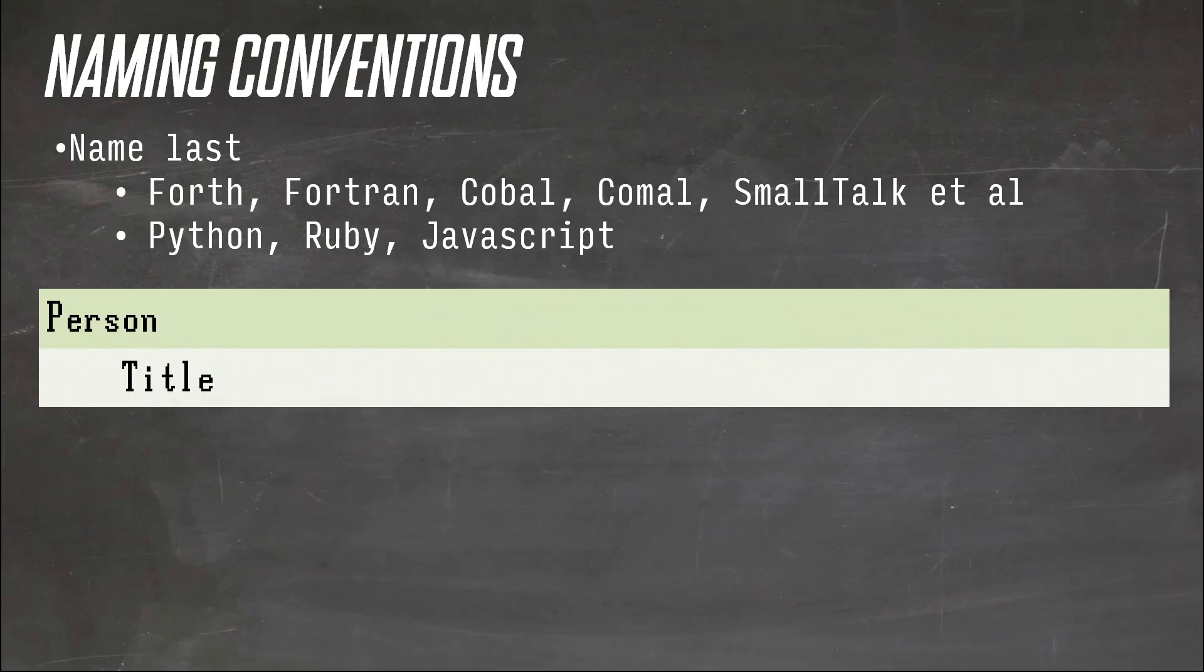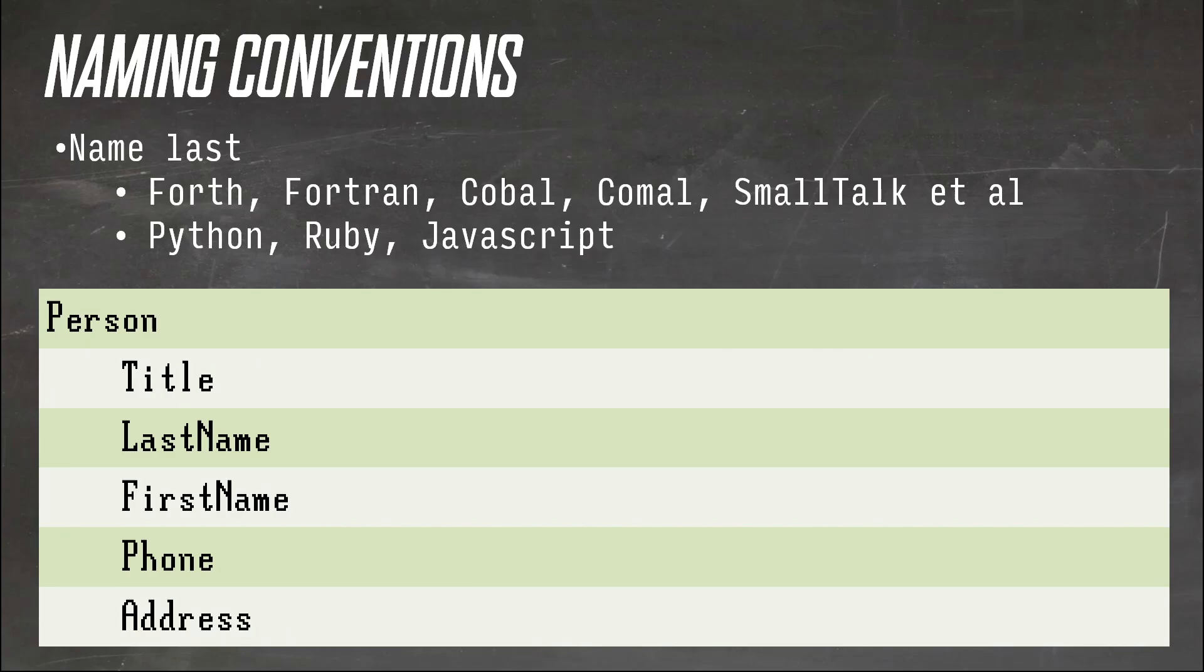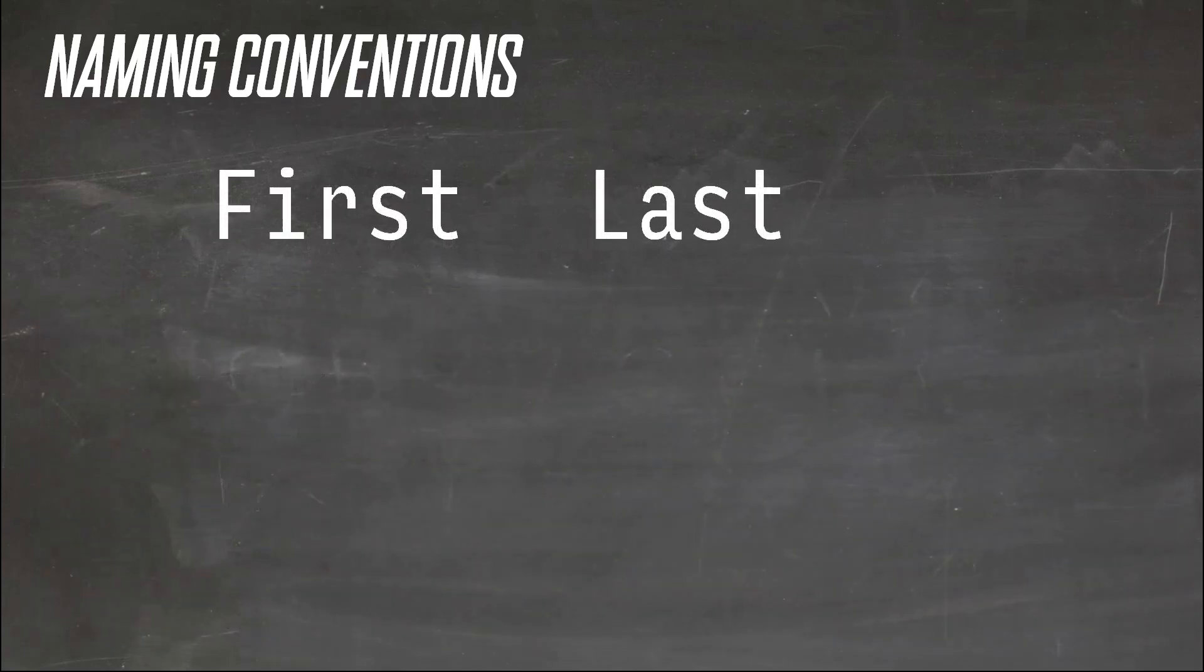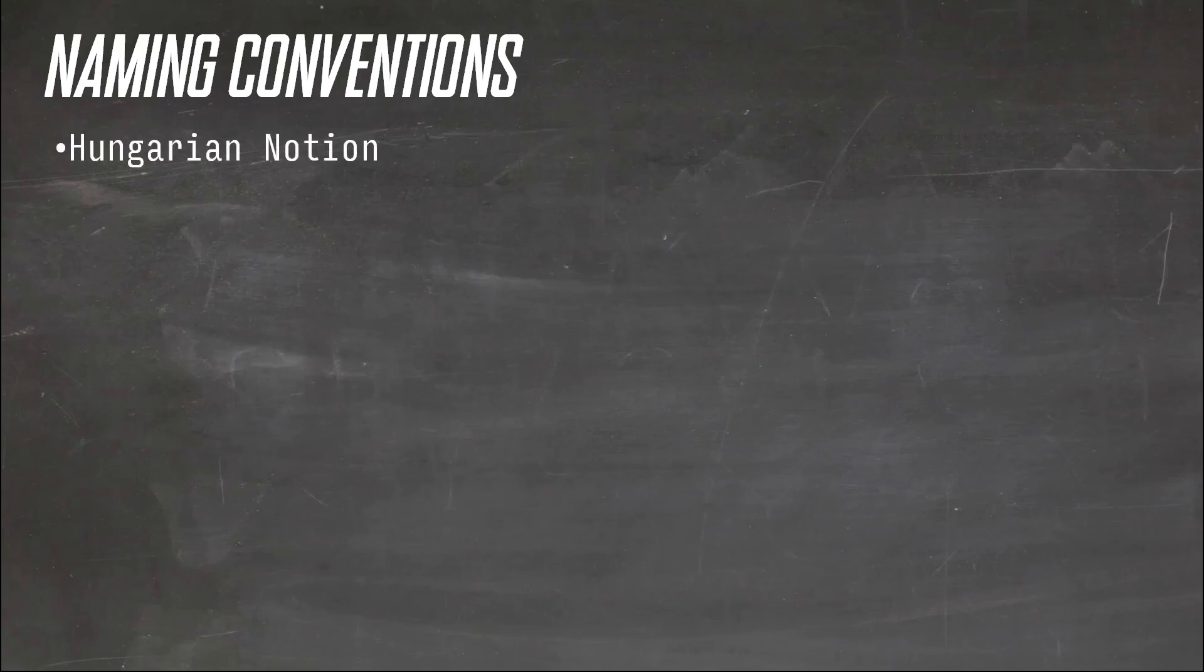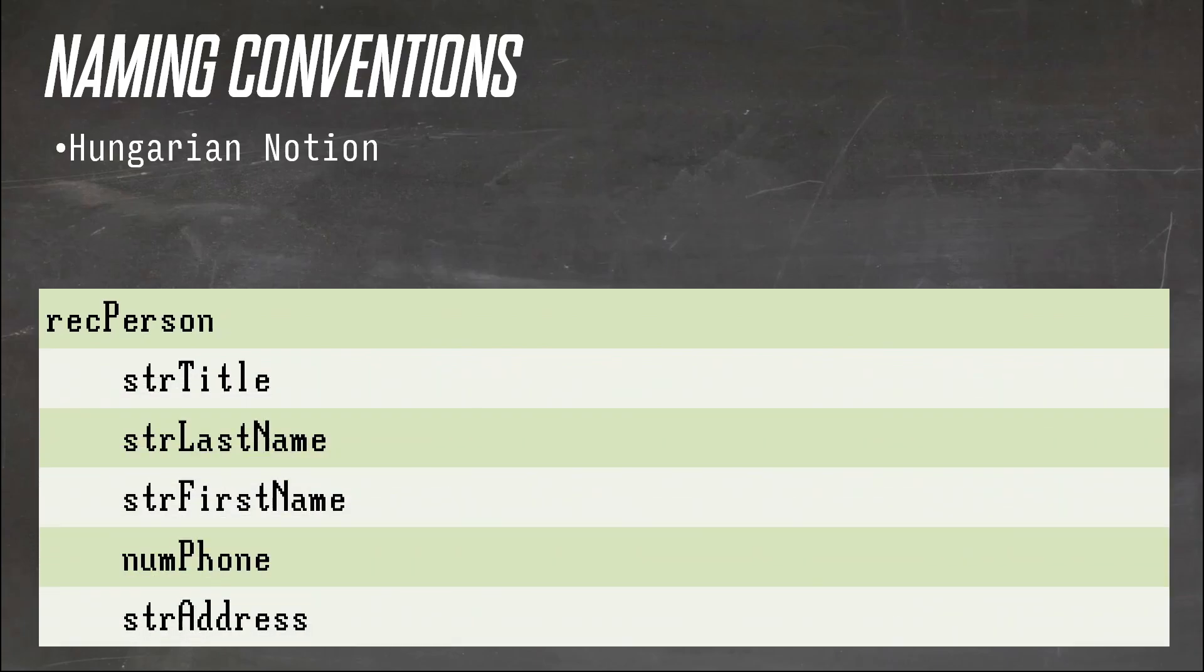So when you opened a record, personal database is the classic example: person, title, last name, first name, phone, and address. You don't know what anything is, so you append it to the end, and thus: person record, title string, last name string, first name string, phone number, address string. Then, at Microsoft, there was a man from Hungary, and in Hungary, like many other cultures, they'd write their names last, then first. He came up with the idea of putting the type up front, thus: rec person, str title, str last name, str first name, number phone, str address. And this became known as Hungarian notation.